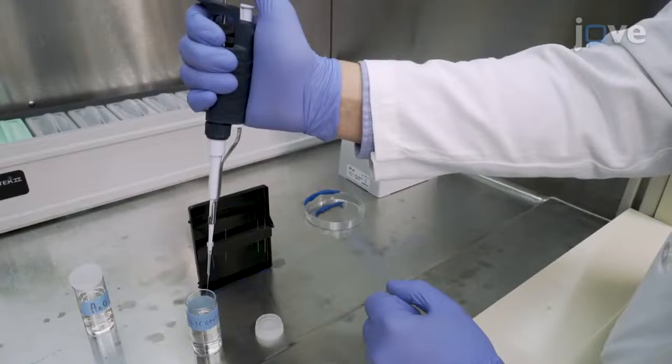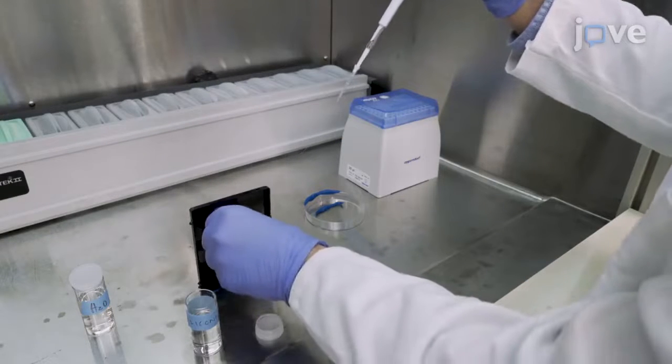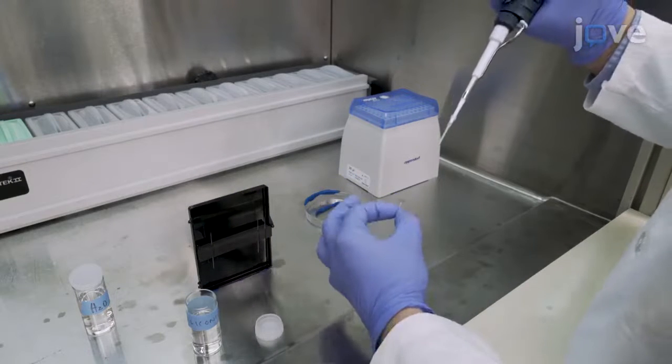Next, load 5 to 10 microliters of siliconizing agent into a micro-injection pipette tip and place the tip in the wide end of one externally coated pulled glass capillary.